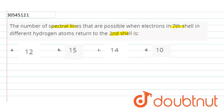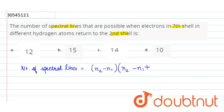We should know the basic formula for calculating the spectral lines. The number of spectral lines is equal to (n2 minus n1) multiplied by (n2 minus n1 plus 1), divided by 2. Here, n2 is your initial shell and n1 is the lower shell to which the electron jumps.